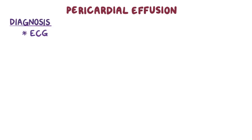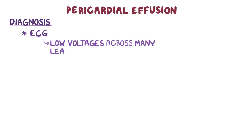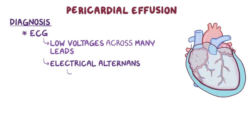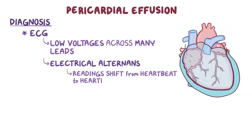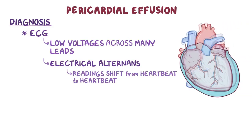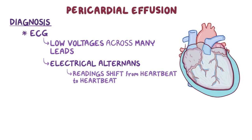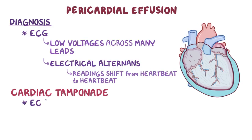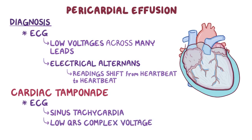On ECG, a large effusion can cause low voltages across many of the leads due to the increased distance from the chest leads. It can also cause electrical alternans, which is where the readings shift from heartbeat to heartbeat due to the heart jiggling around with the effusion. In cardiac tamponade, classic ECG findings include sinus tachycardia and a low QRS complex voltage.